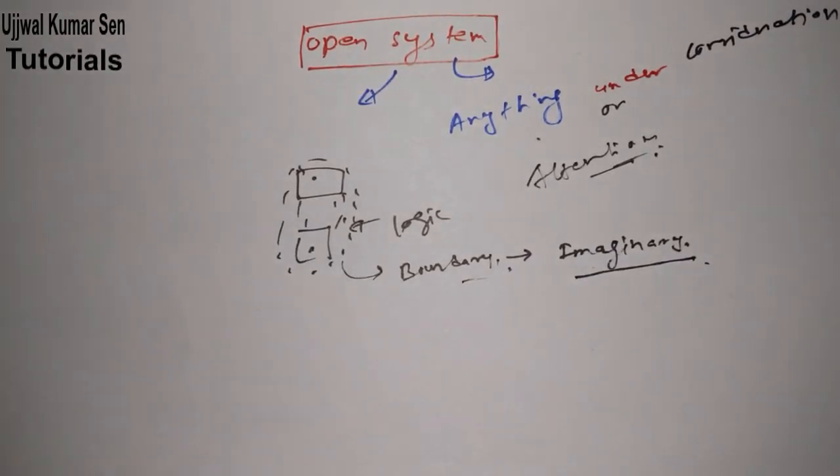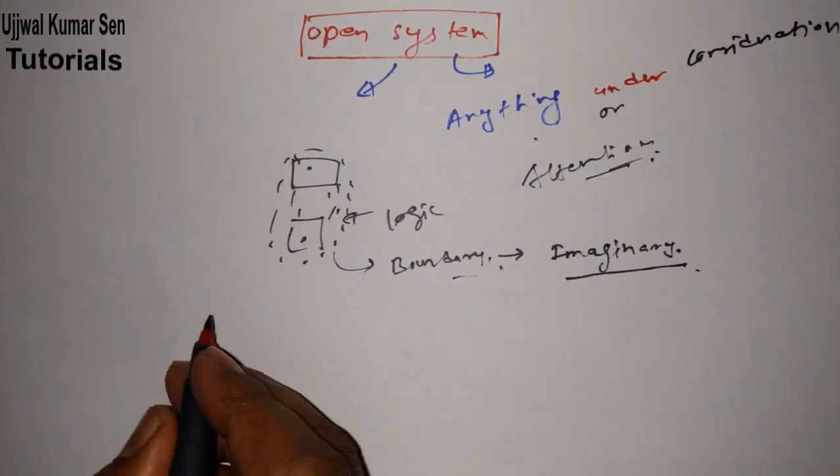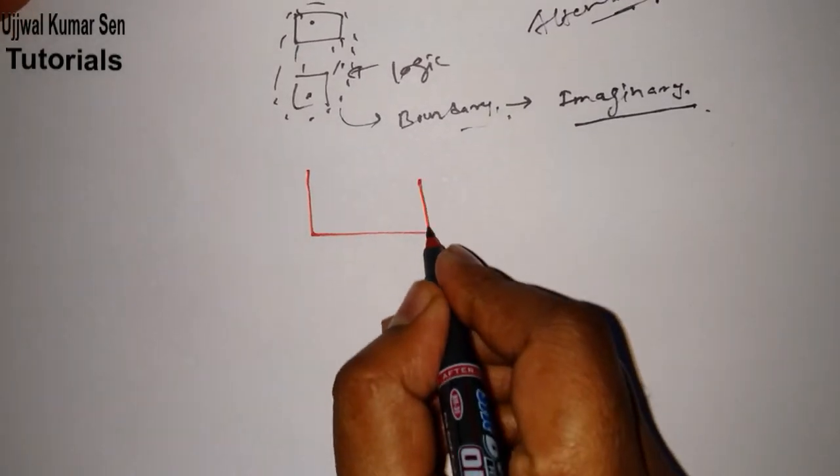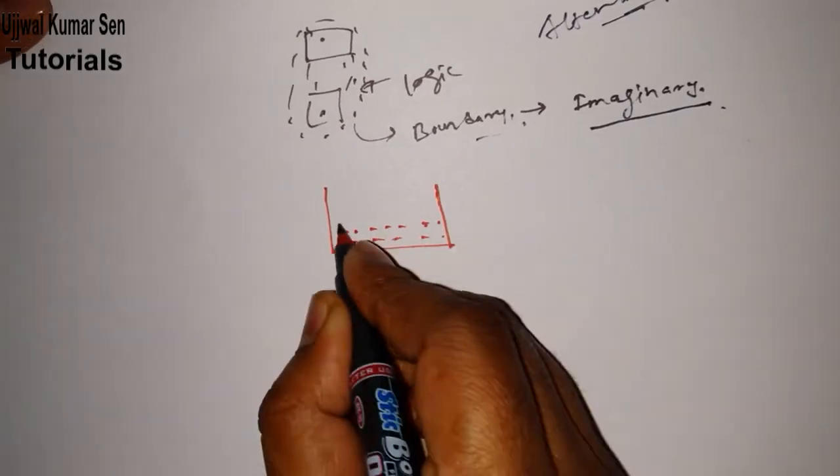Now this is about system. I don't want to talk much more about system because this tutorial is all about open system. Let's go for it. What is basically an open system? Suppose there is a saucepan and you wanted to make tea.